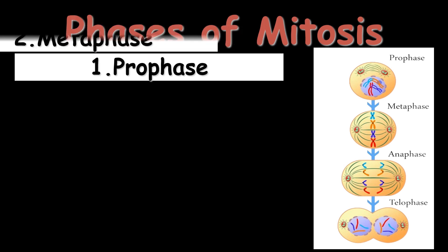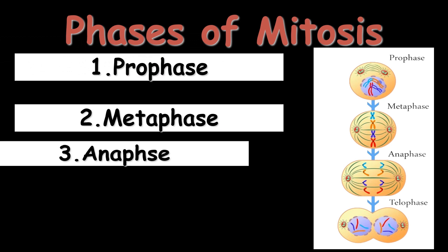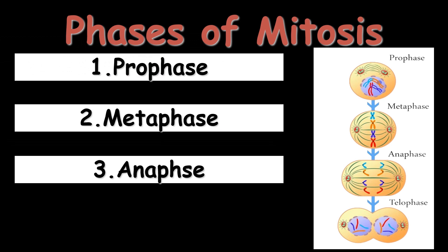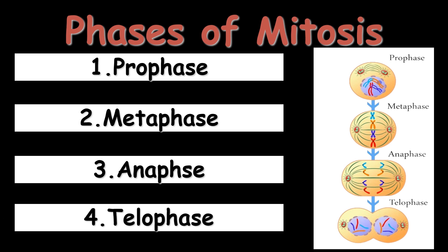When all the preparations are done for the division of the cell — having gone through G1, S, and G2 phases of interphase — the cell enters the M phase, which consists of four phases: prophase, metaphase, anaphase, and telophase.